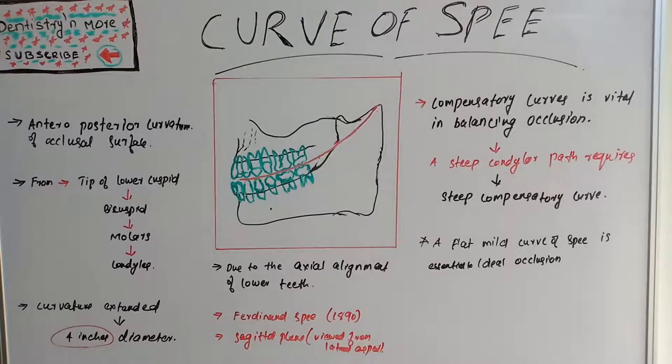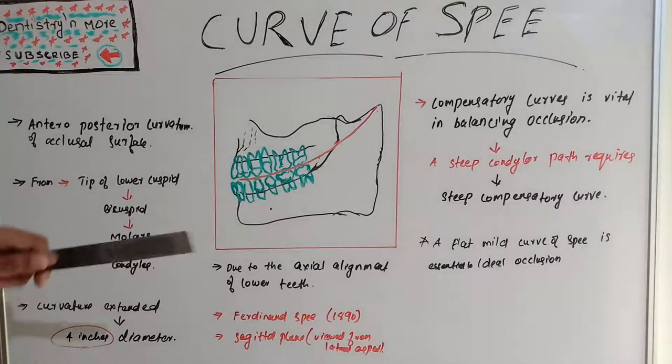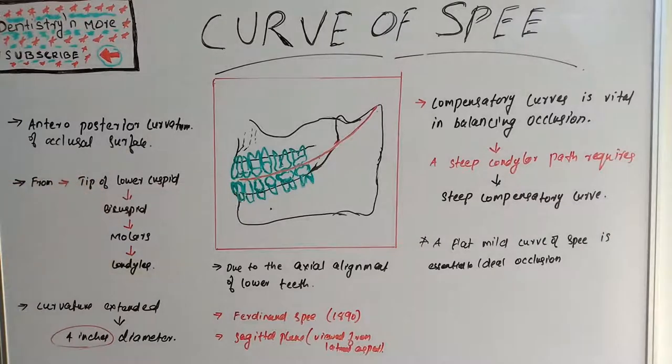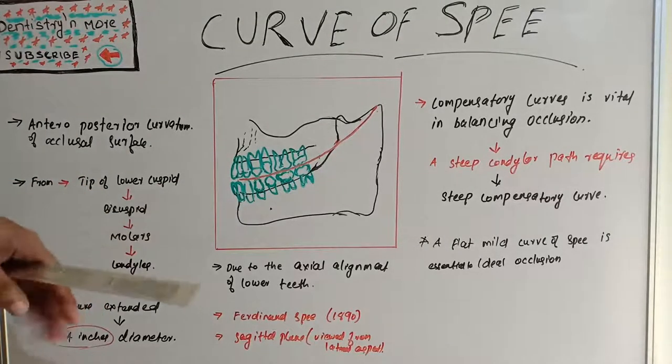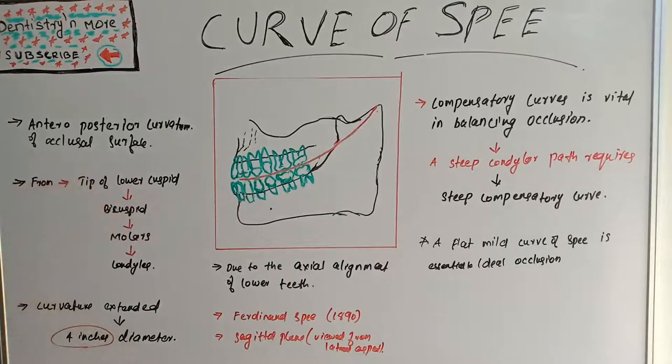Christiansen's Phenomena is when a flat occlusal scheme is given, an opening takes place in the posterior region during the protrusive movement.